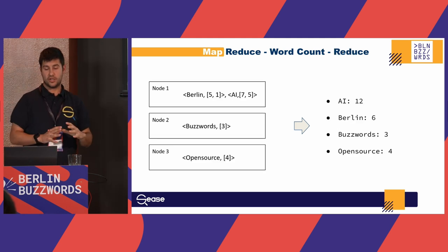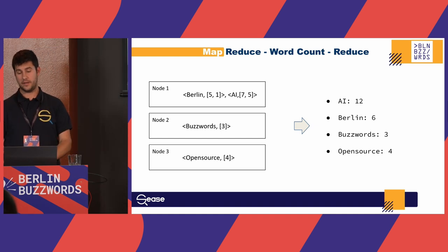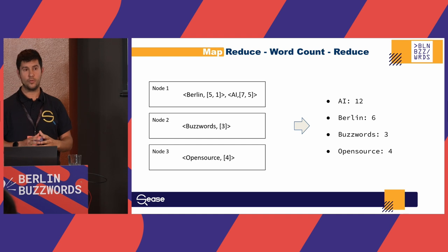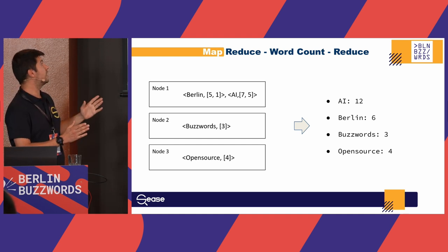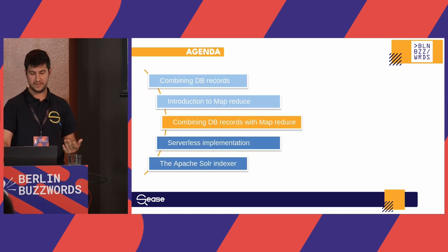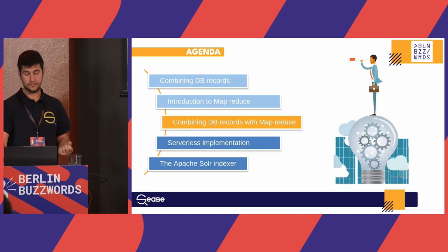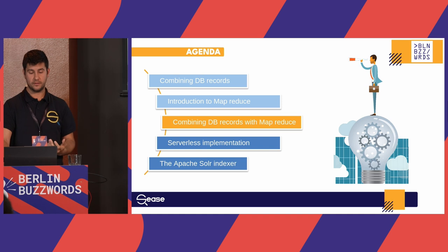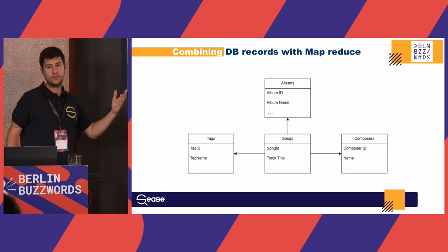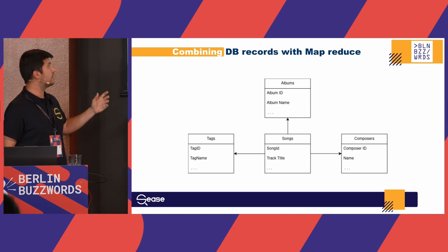For each of these grouped results we apply the reducer. In this simple example we just want to count total occurrences, so the reducer gets all the values and sums them up. This is pretty simple. Now, how can we use it for combining database records?